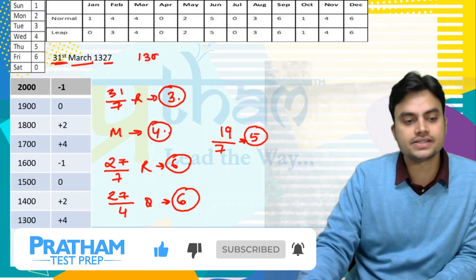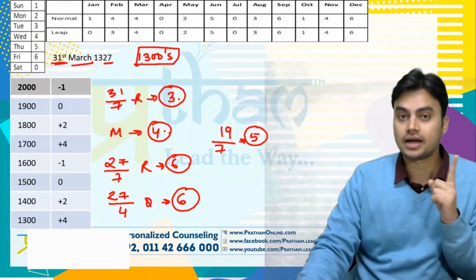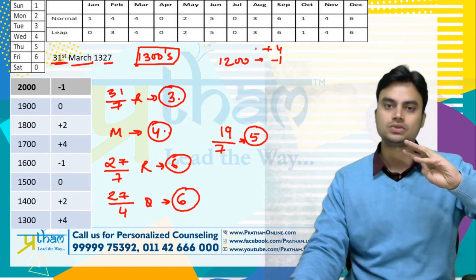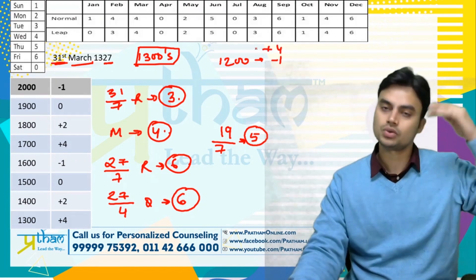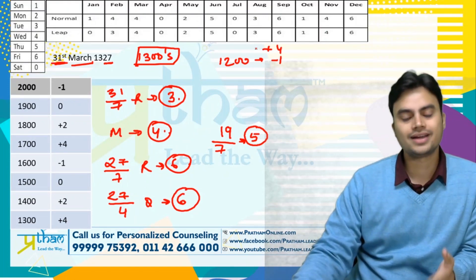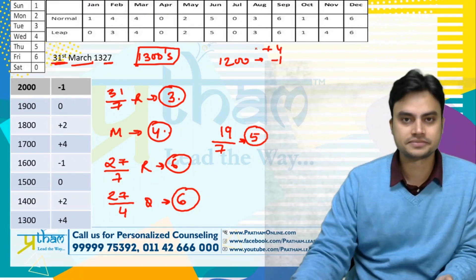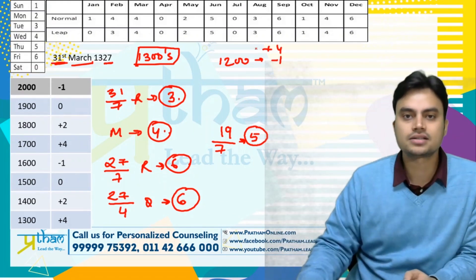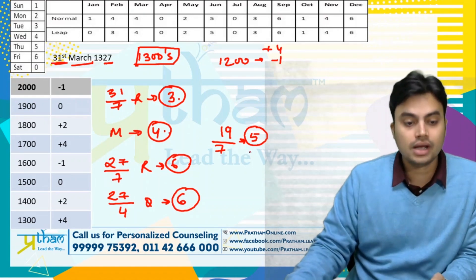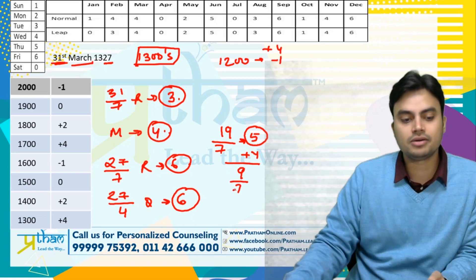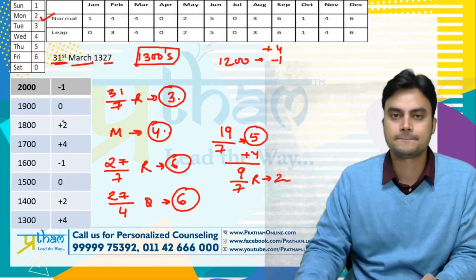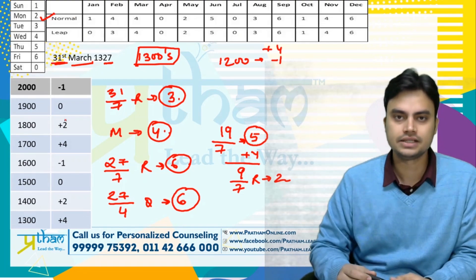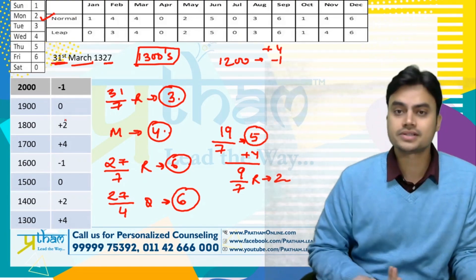Kyunki yeh 1300 ka series hai, 1300 ka series mein kya karenge? Benchmark yaad karo — 1200 humara benchmark hai, uske liye minus 1 rakhate the. Ek upar jayenge toh kya kalunga? Minus 1 ke baad aata hai plus 4, plus 4 ke baad aata hai plus 2, plus 2 ke baad aata hai zero — rat lijiye. Short trick hai toh thoda dimaag pe rely karna padega. Yaar se mujhe pata chala ki 1300 ke liye plus 4 karni hai. 5 plus 4 kya ho jayega — 9. 9 divided by 7 remainder is 2, so answer is Monday.